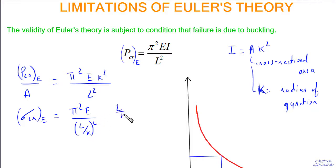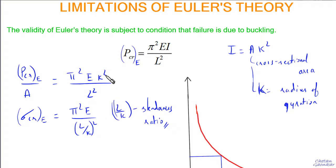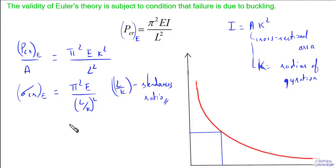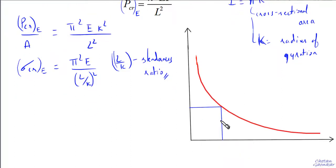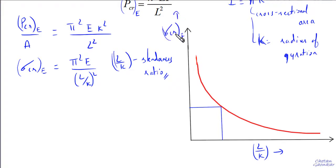This L/k term is a very important term in the case of long columns and is called the slenderness ratio. Let us try to understand the limitations of Euler's theory using this expression and with the help of a graph. This is a graph of the slenderness ratio L/k on one axis and the critical stress from Euler's theory on the other axis.